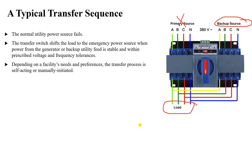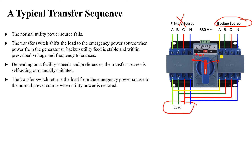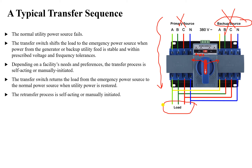Depending on facility needs and preferences, the transfer process can be self-acting or manually initiated. You can see here a switch for auto or manual mode — you can switch between these two modes. When the utility power is restored, the transfer switch returns from the emergency source back to the normal source, turning off the backup and resuming power from the primary source. This re-transfer process can also be self-acting or manually initiated.